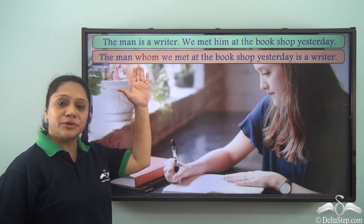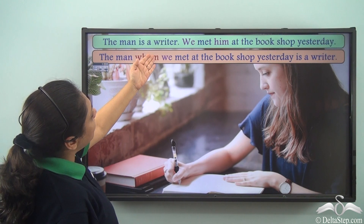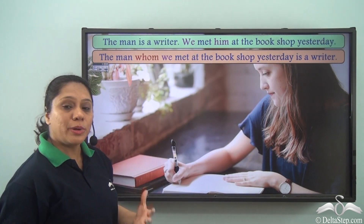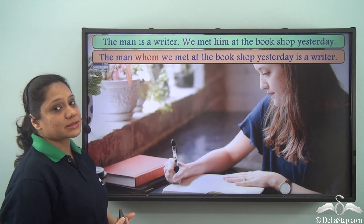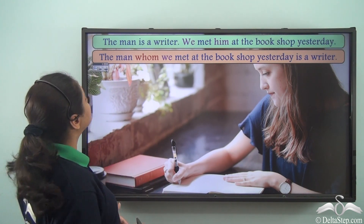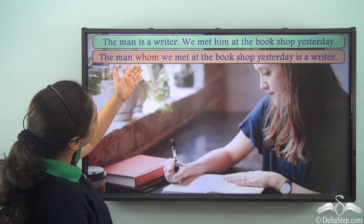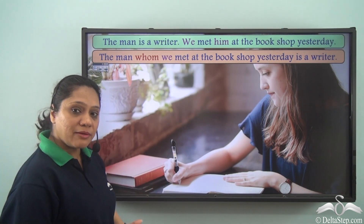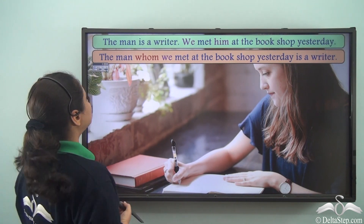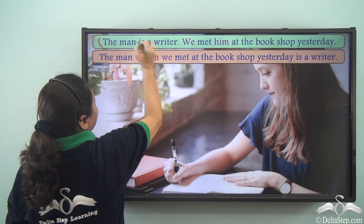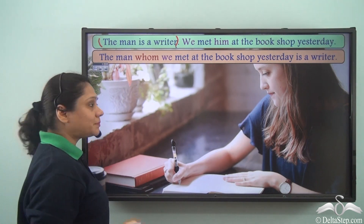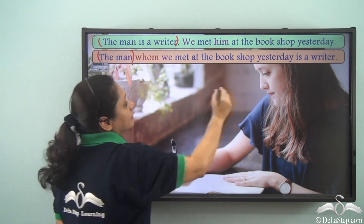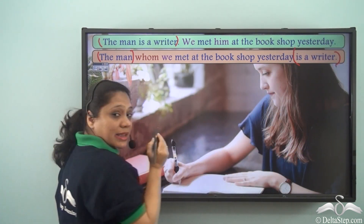Now let us read these two sentences: 'The man is a writer. We met him at the bookshop yesterday.' Now we can join both these sentences and write a single sentence as: 'The man whom we met at the bookshop yesterday is a writer.' So what have we done here? Let us now see. 'The man is a writer' is our first sentence, and in our new sentence 'the man is a writer' is written.